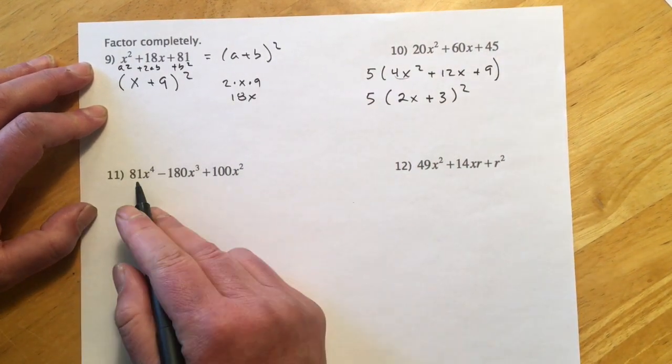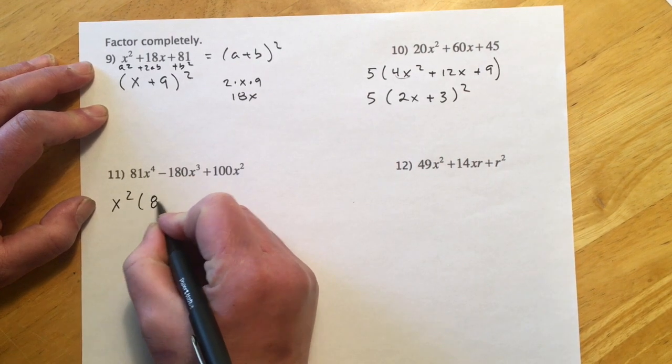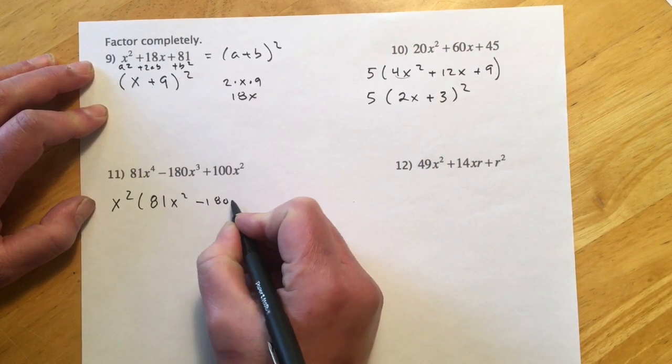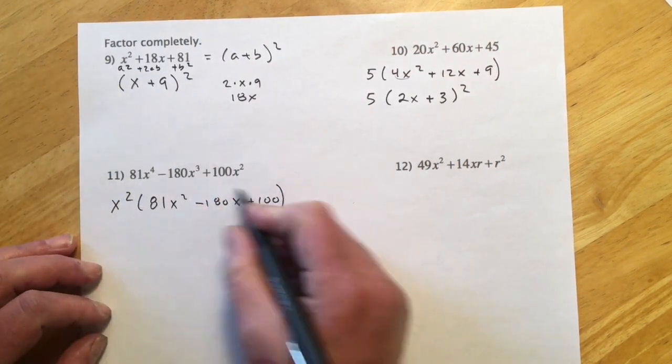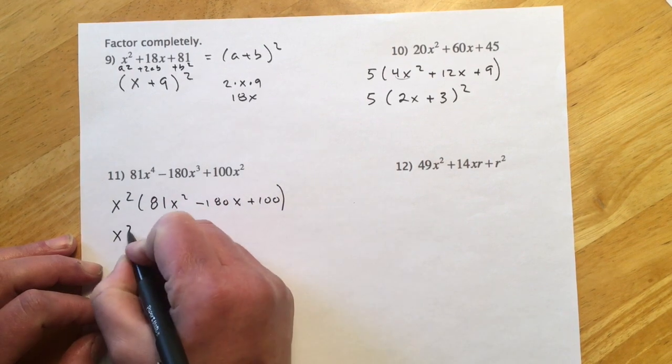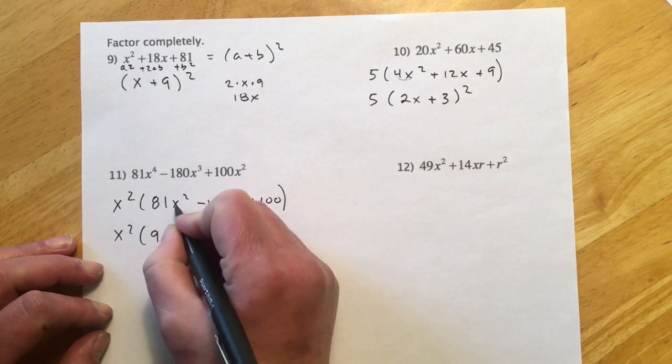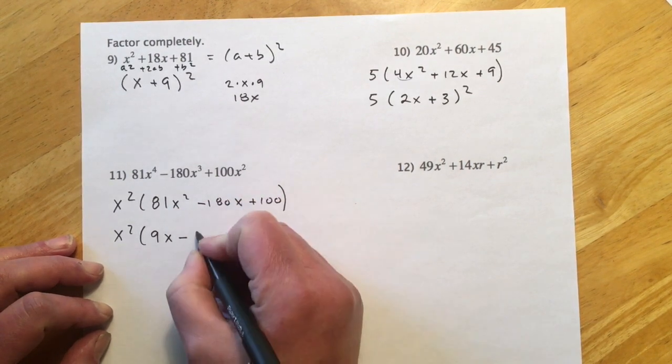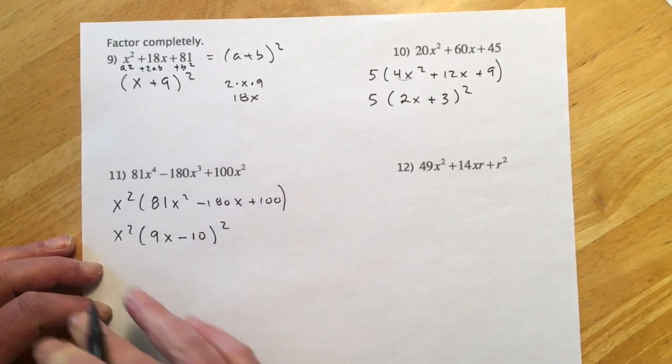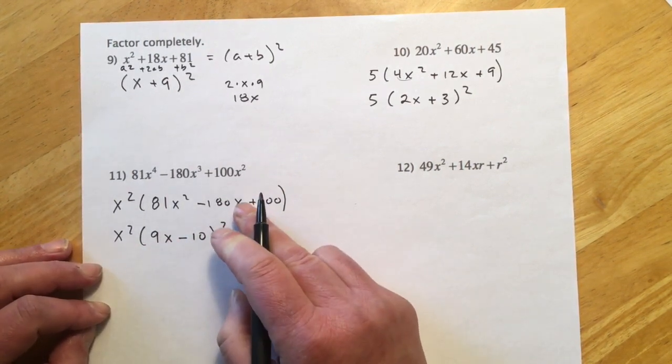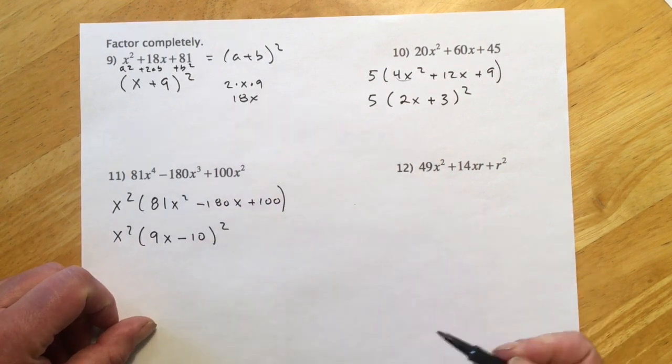This one's got a GCF, best I can do is x². Get that out, gives me 81x² - 180x + 100. These would be really huge numbers if I was trying to do magic, but because I see the perfect squares, I'm just going to try what I think will probably work. Break this down, get 9x, break the 100 down and get a 10. This one's minus because the middle term is minus. So x²(9x - 10)². I check that middle: 2 times 9 would be 18, times 10, there's our 180, so it is what we think.